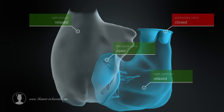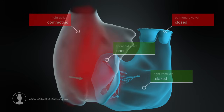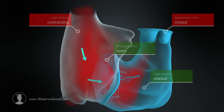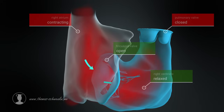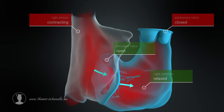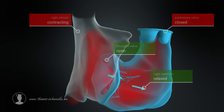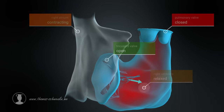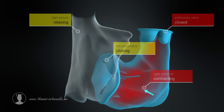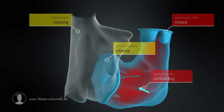Contracting the atrial muscles initiates atrial systole, which pushes blood from the atrium into the ventricle. The atrial muscles then relax and the ventricular muscles contract. The resulting pressure closes the tricuspid valve.